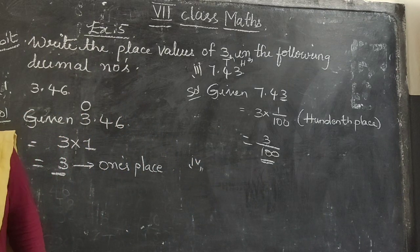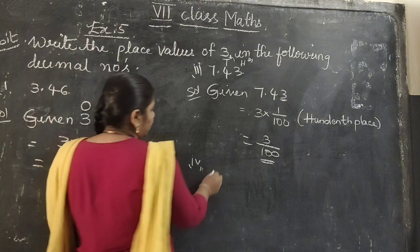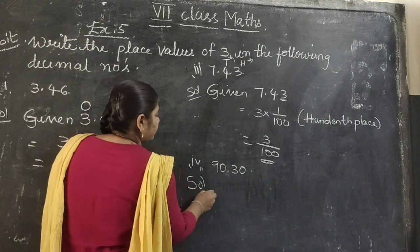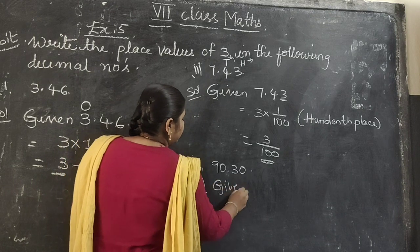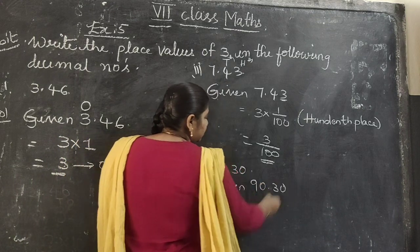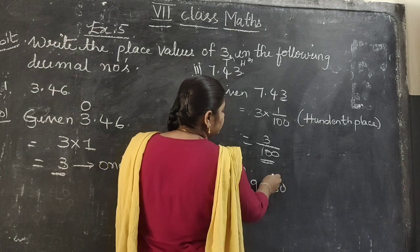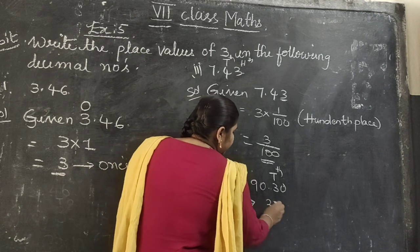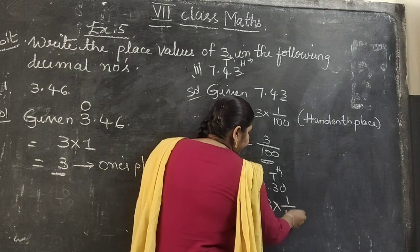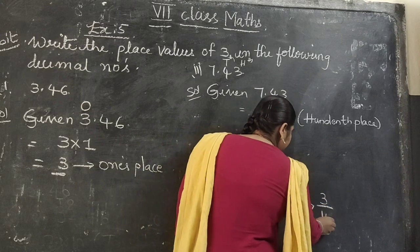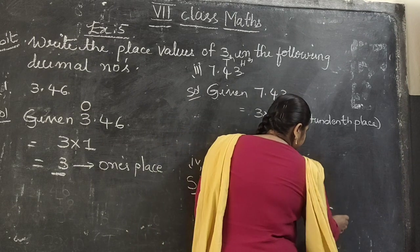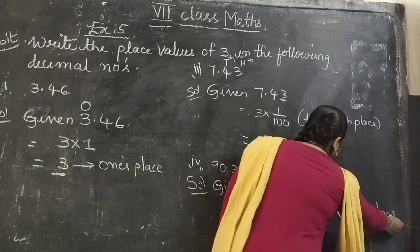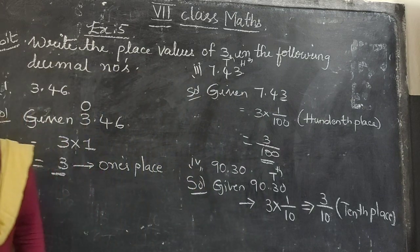4th one: there is 90.30. So given 90.30, the place value starts from 10th. So 3 is in 10th part. So what we can write here: 3 into 1 by 10, which is nothing but 3 by 10. That is 10th place.